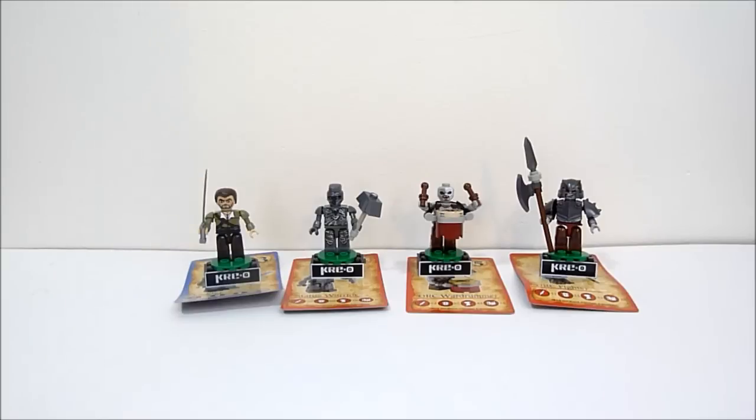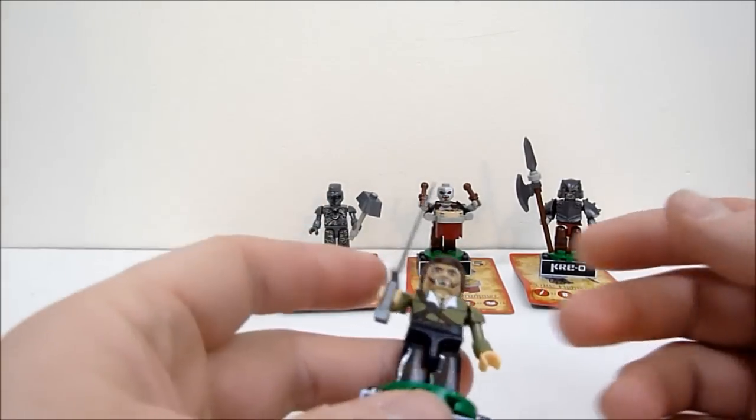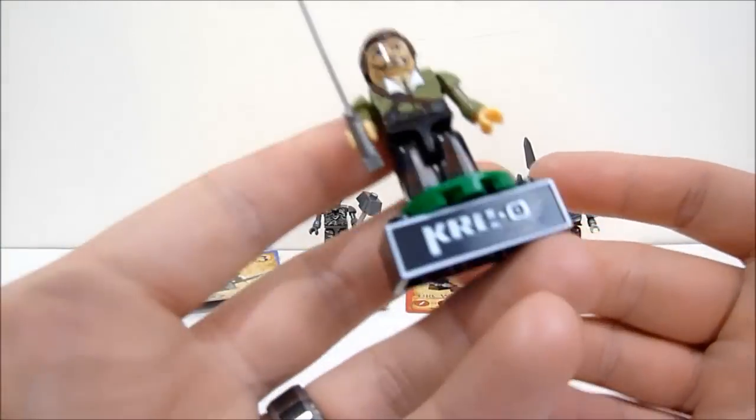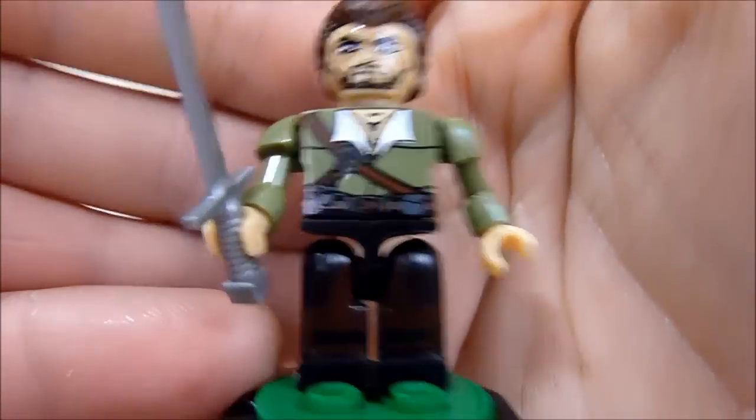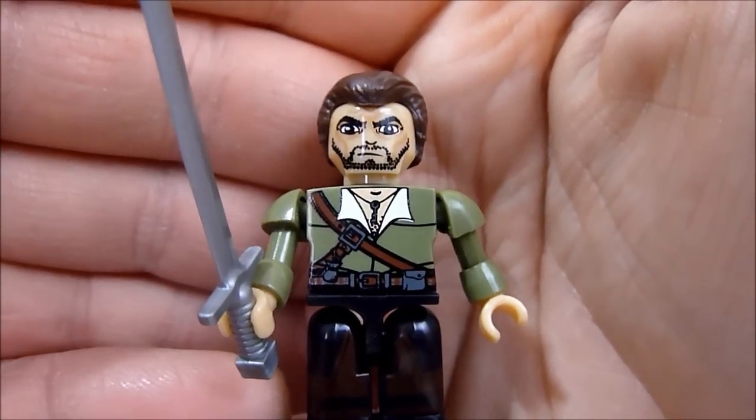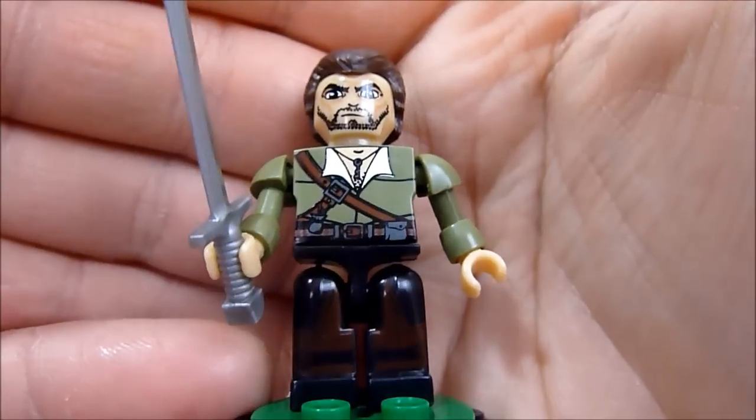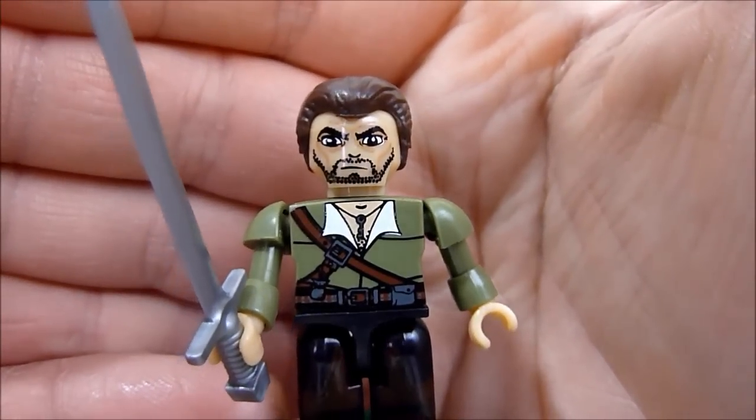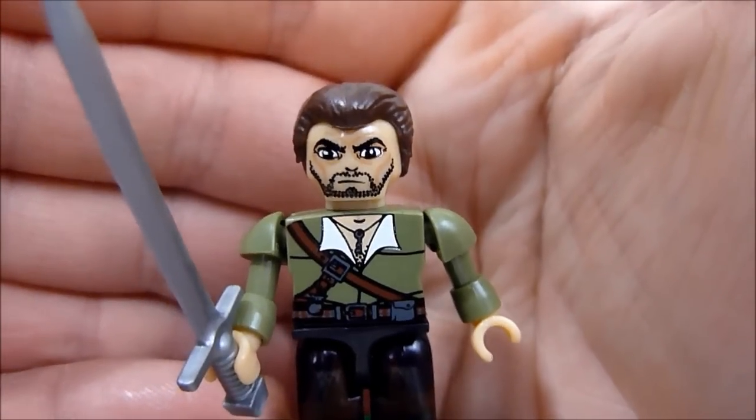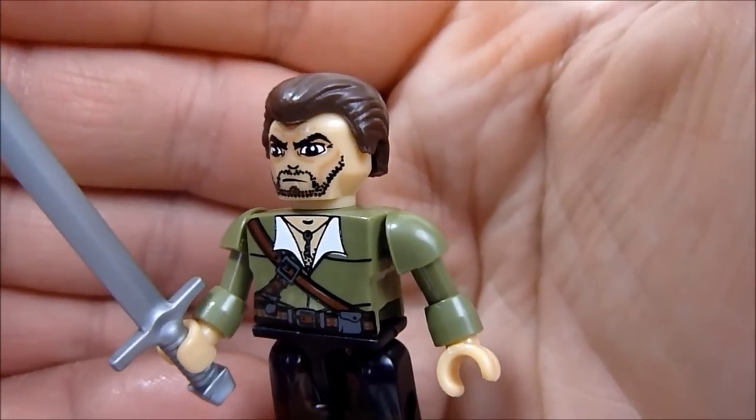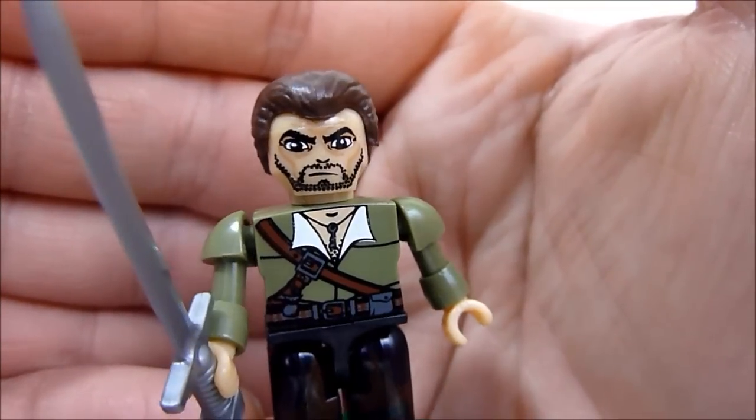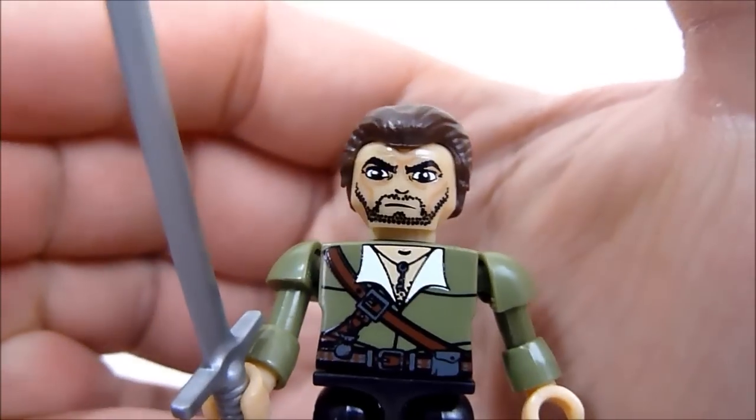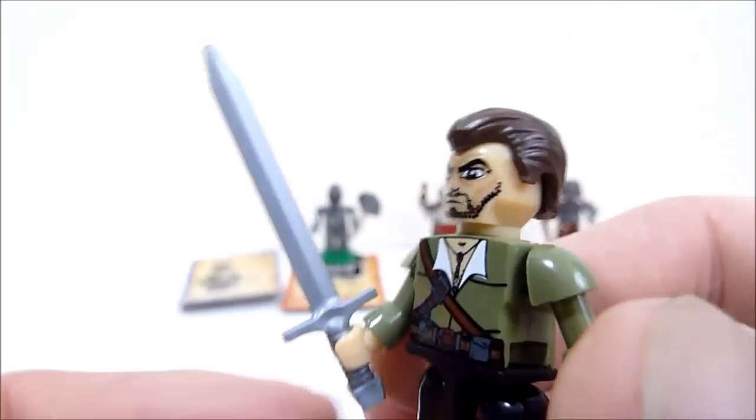All right, here we go. We'll start over here on the left with the Fighter, probably the least impressive of this particular batch, but he's actually pretty cool. He's got a nicely printed torso as these all have been. He's got printed legs, they're a bit dark. He's got a very interesting face print. I don't know how I feel about the lines in his face, the different patches of darker color make his face look weird rather than grizzled. But he's got a really cool sword.